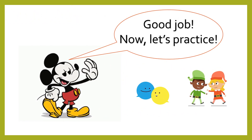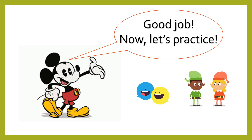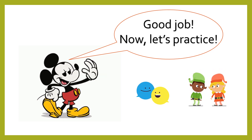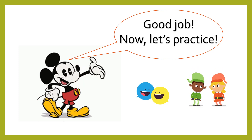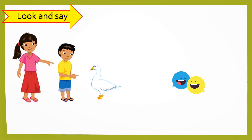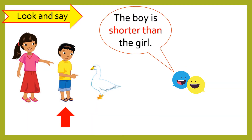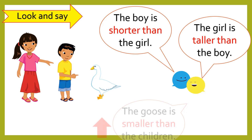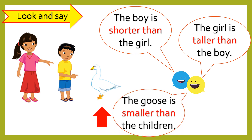Now, let's practice. Look at the boy and the girl. We can say the boy is shorter than the girl. Or we can say the girl is taller than the boy. Or the goose is smaller than the children.